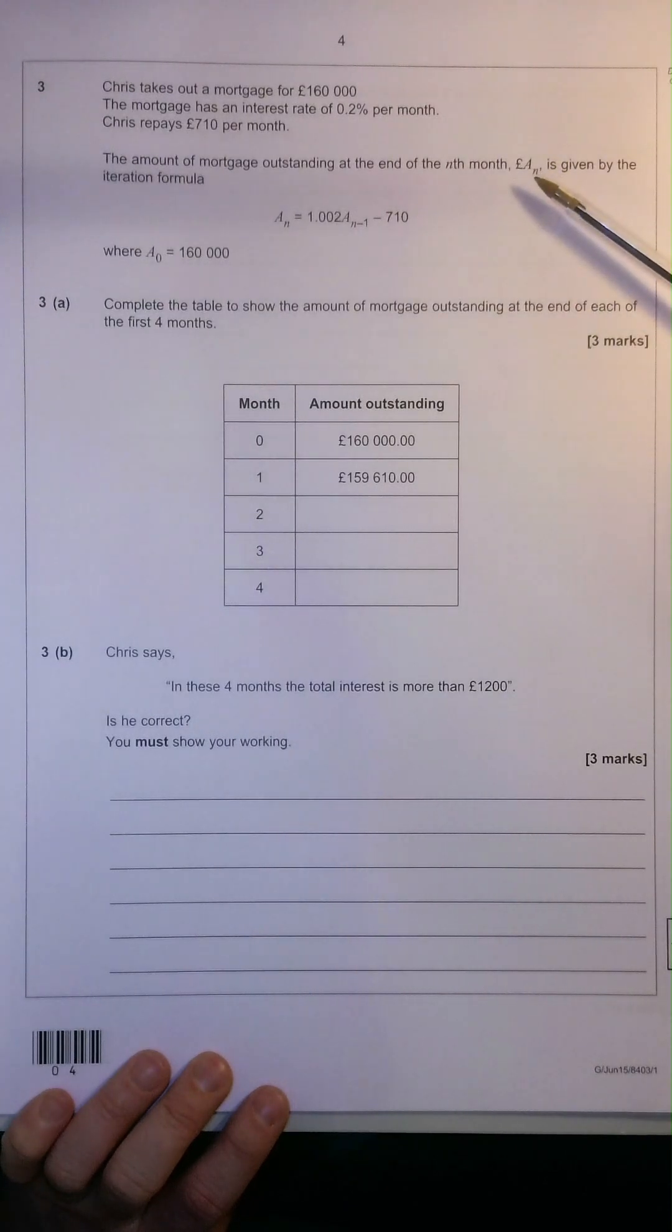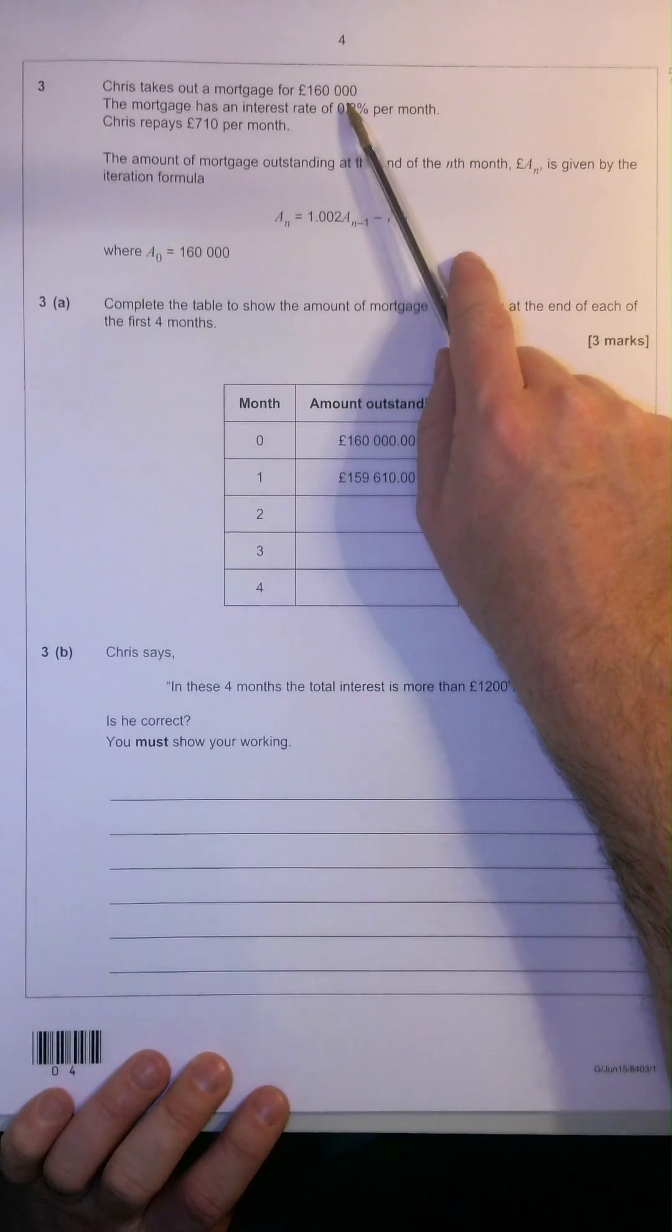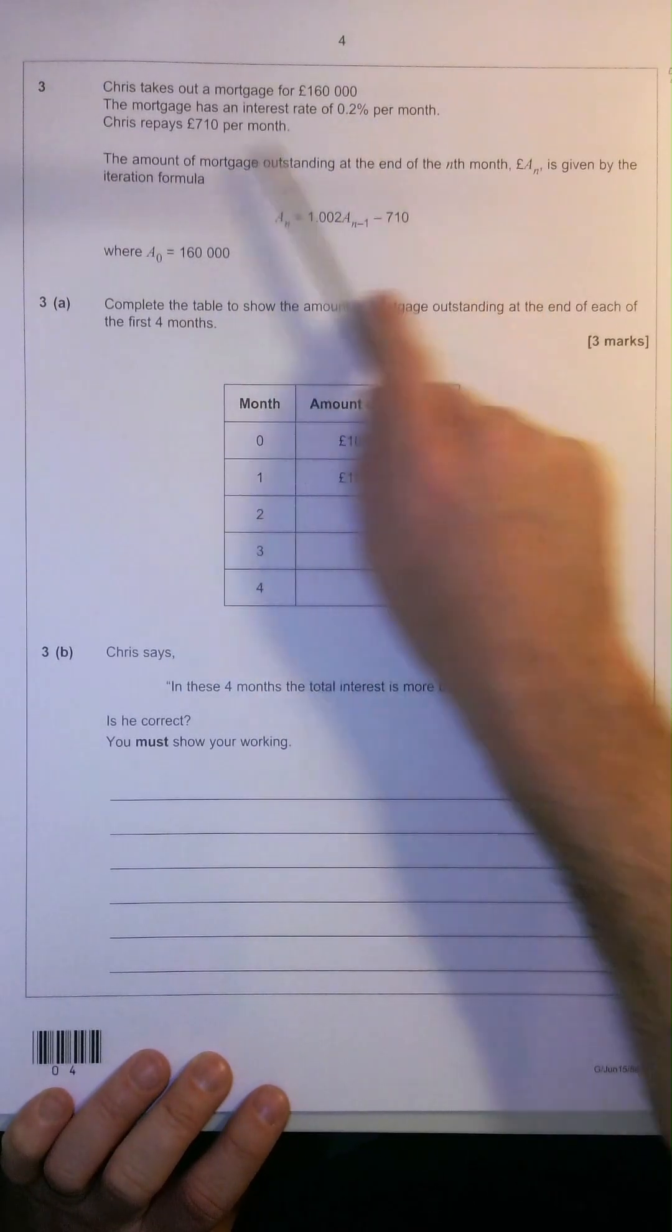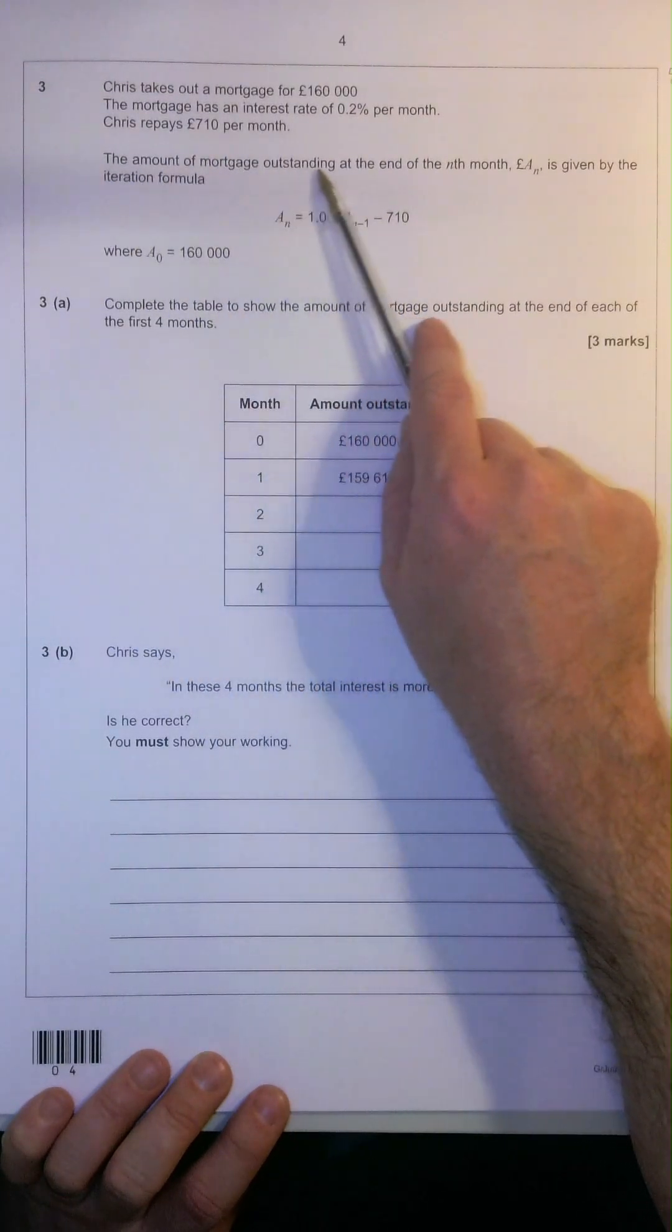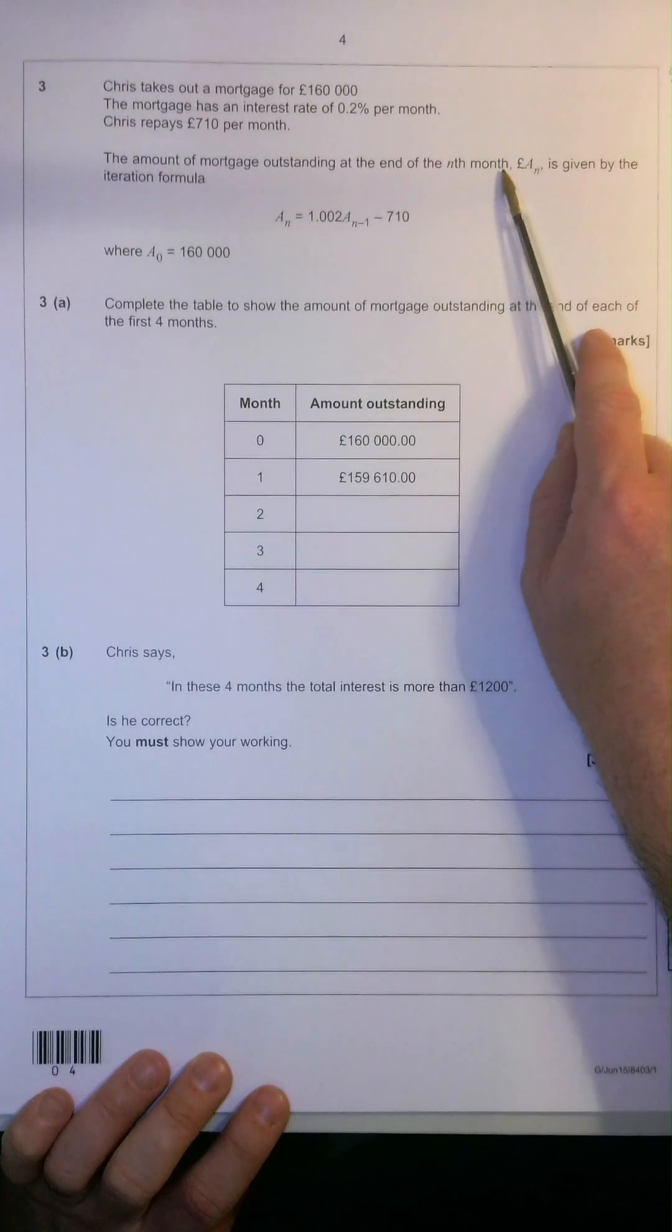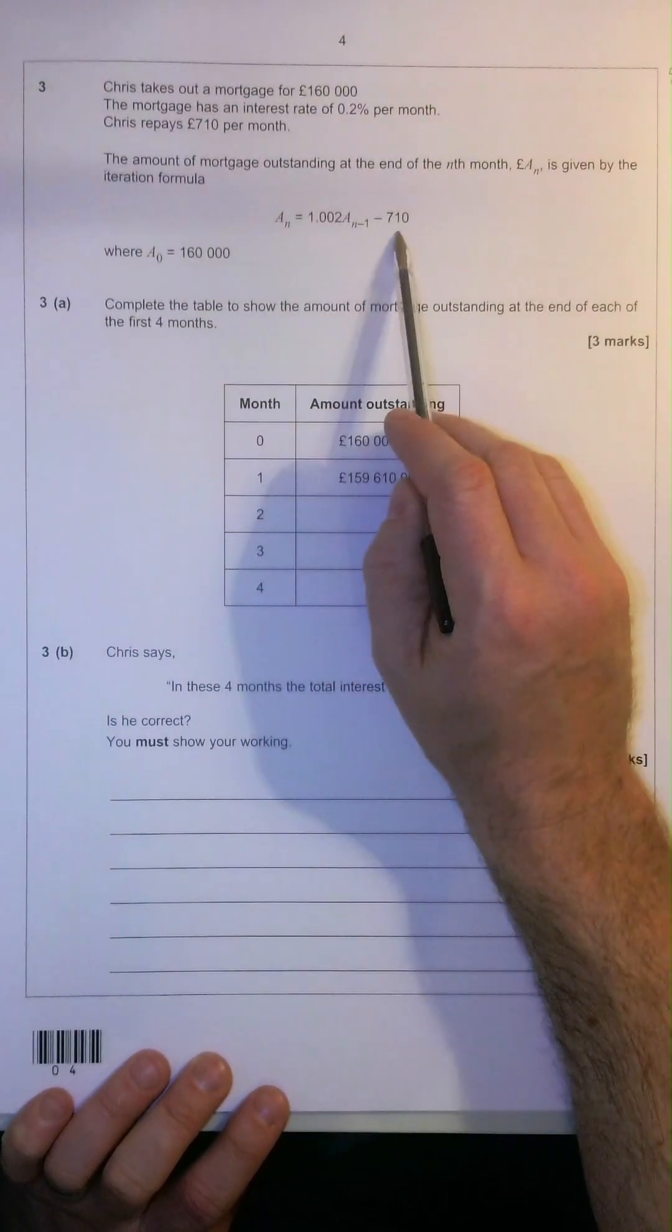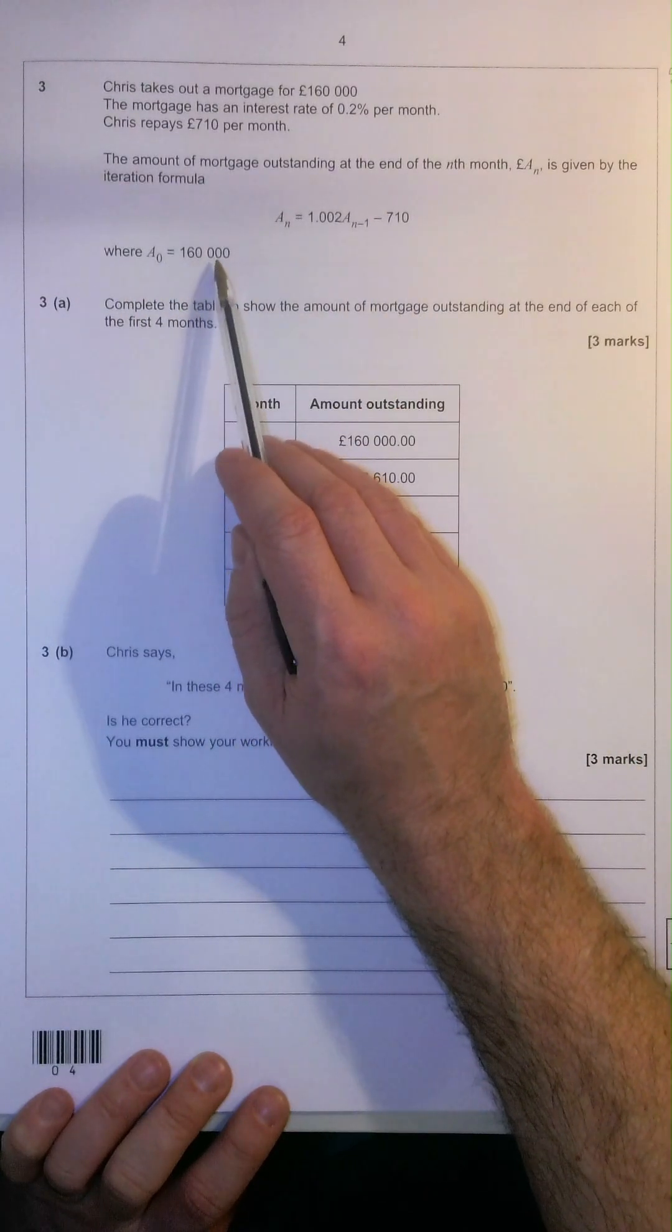This question is all about calculating mortgage interest rates. Chris takes out a mortgage for $160,000. It has an interest rate of 0.2% per month. He repays $710 per month. The amount of mortgage outstanding at the end of the nth month is given by the iteration formula, and we can see it below, where A0 equals $160,000.